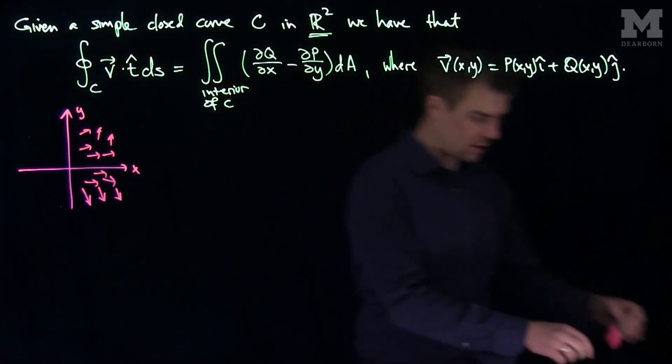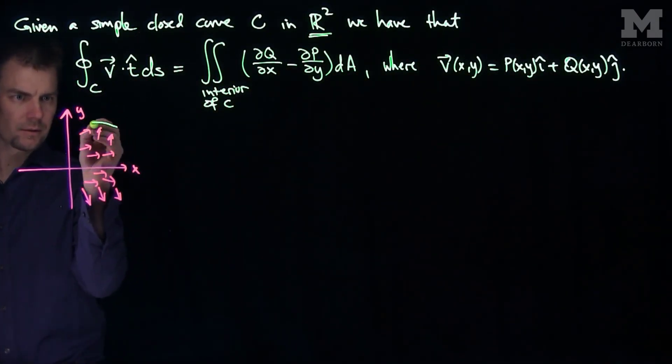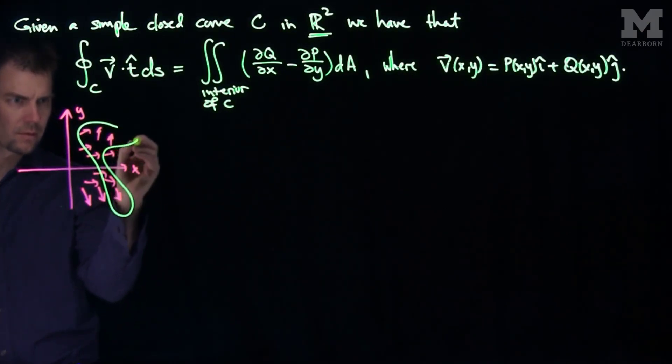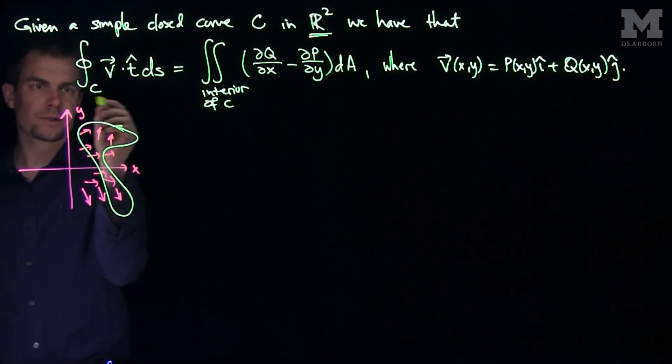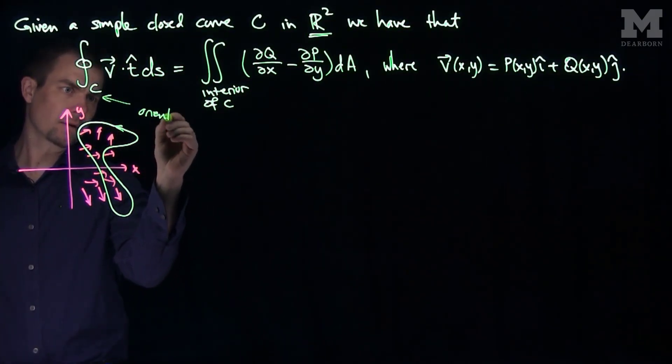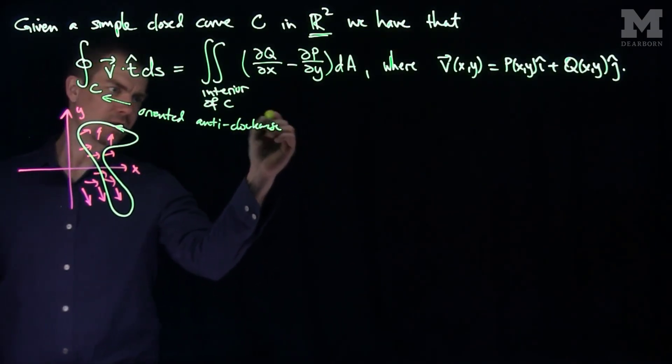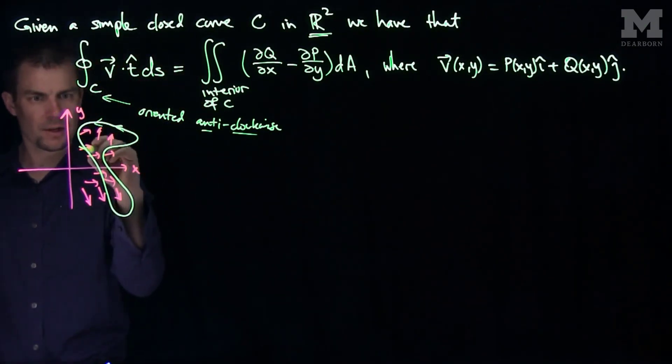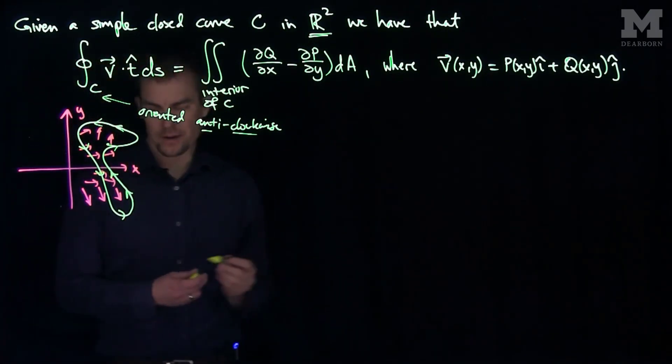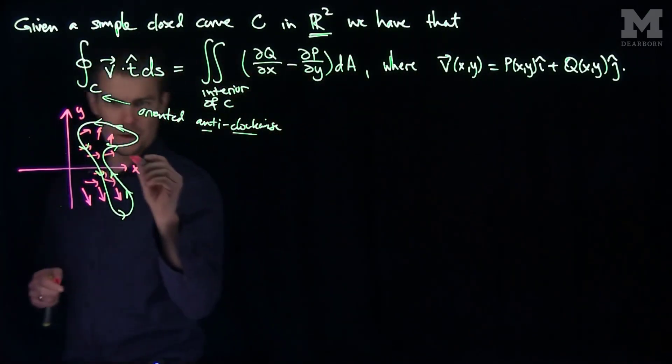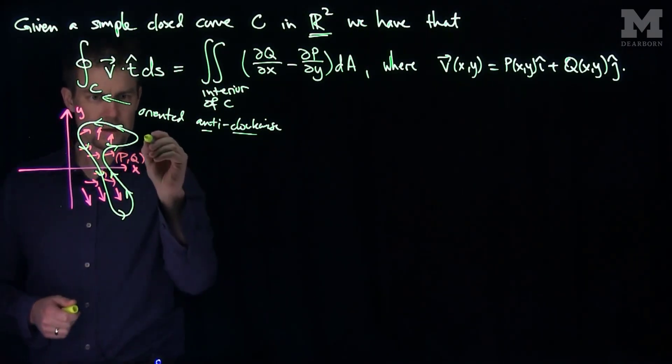And you have a simple closed curve, so you have a curve like this. One thing we should mention: this curve C has to be oriented anti-clockwise, otherwise the sign changes. So it goes around like this, opposite to that of a clock. And this vector field given here is really P comma Q, and this is your curve C.